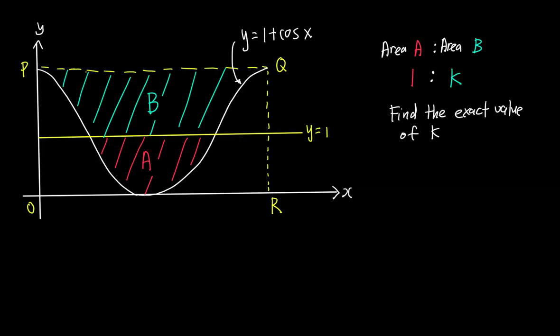Over here you should be able to see a diagram with a graph y equals 1 plus cos x, and they give you both different areas in the red and blue color. They give you the ratio of the area: Area A is ratio 1, Area B is ratio k, and they ask you to find the exact value of k.